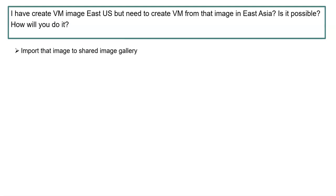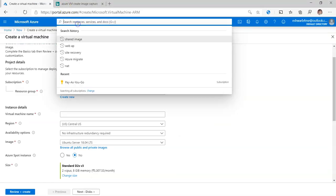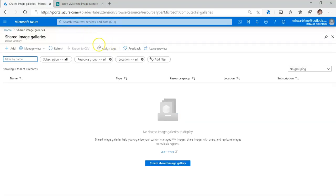The Shared Image Library will help you to capture that image for the global region. For example, a company may have a hundred infrastructure teams across the globe — you created the image for Asia, but the same image needs to be reused by East US. In those cases, Shared Image Library will help. You need to first create the image gallery and import that particular image to the Shared Image Gallery. That's how you can spread it across regions. I'll make a separate video for this.